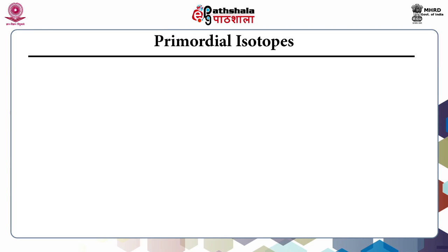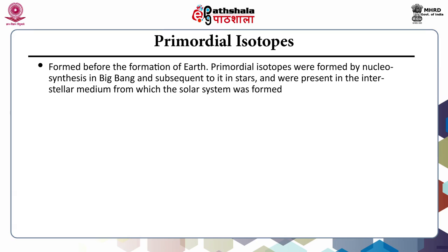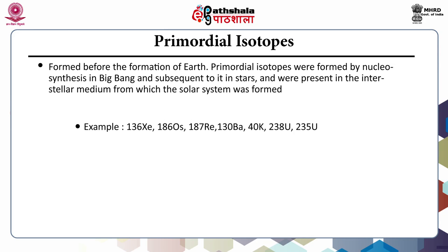Primordial isotopes were formed before the formation of Earth. They were formed by nucleosynthesis in the Big Bang and subsequently in stars and were present in the interstellar medium from which the solar system was formed. Some examples include xenon-136, osmium-186, barium-130, potassium-40, uranium-238, and uranium-235.